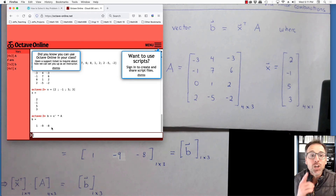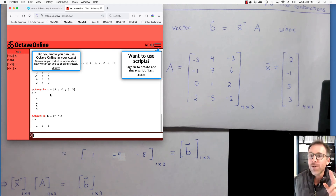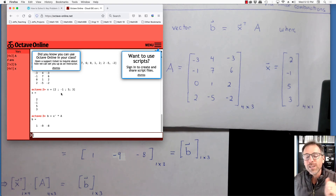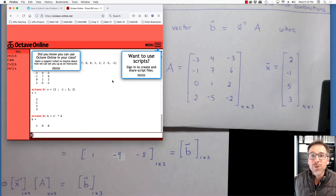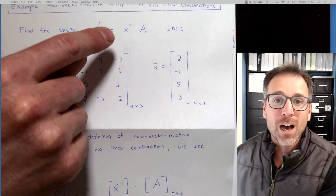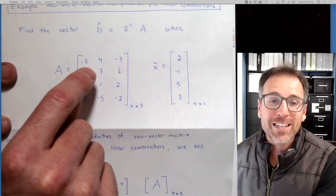Now set b equal to x-transpose — the transpose is the single quotation mark — then multiply by A. The output is [1, -9, -8], which confirms our pen-and-paper result. I encourage you to use Octave to check your work. Once you've done pen-and-paper analysis once or twice to build strong understanding, use Octave freely for calculations — we've spent seven decades developing calculators so you can outsource the grunt work to a computer.